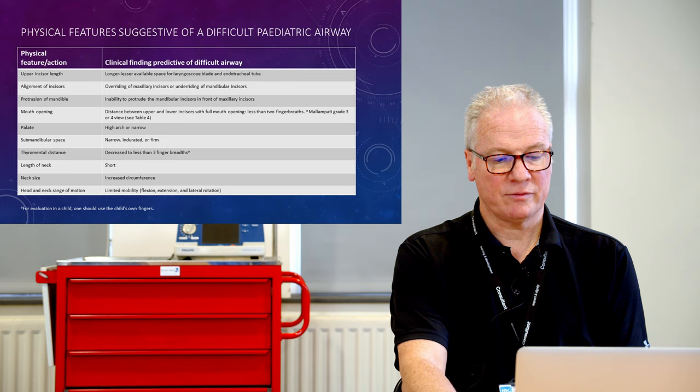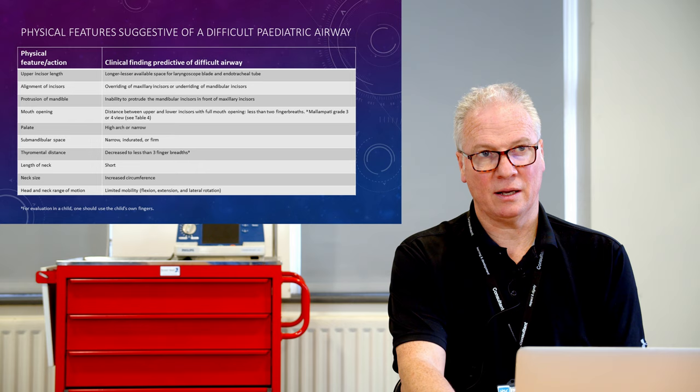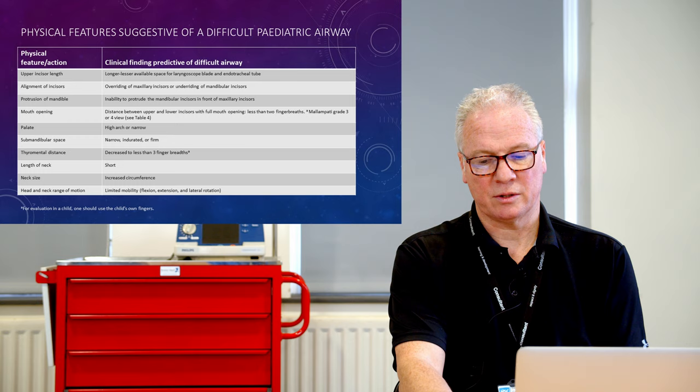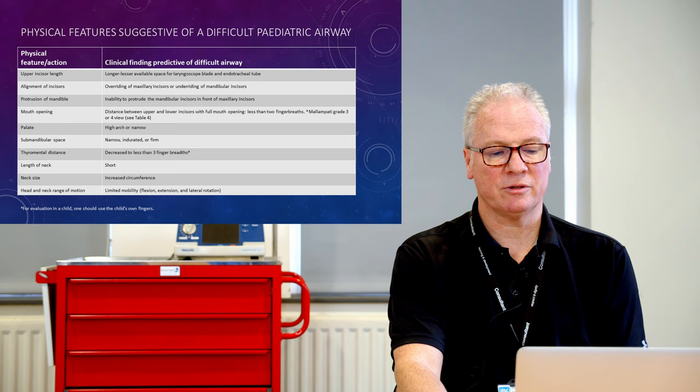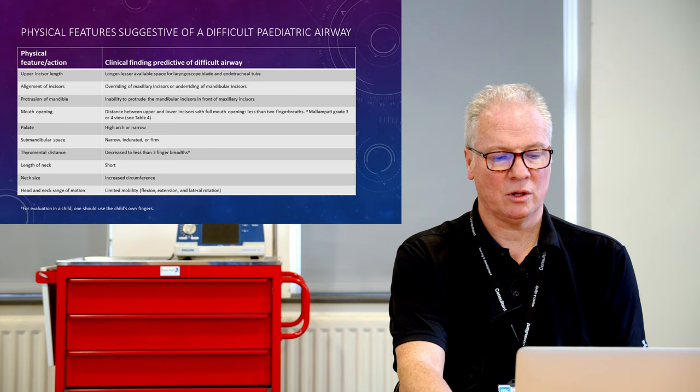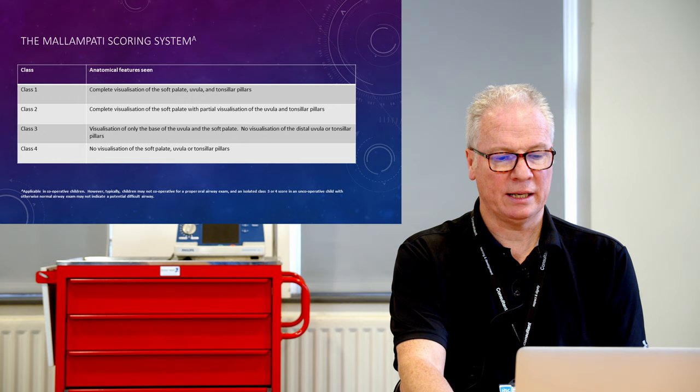The length of neck if it's too short; neck circumference - in adults, increased circumference leads you towards thinking there would be a difficult intubation, but in children it's much less definite that it has any impact on intubation difficulty. And then head and neck range of motion. The MAL and PADI scoring system - in essence, it's the amount you can see through an open mouth in a cooperative person.